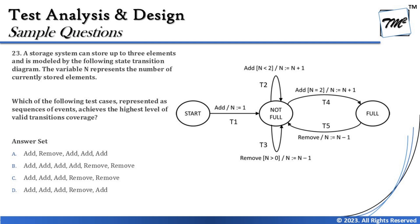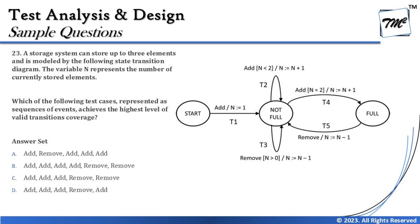Option C says: add, add, add, remove, remove. Three adds make the container full, then you can remove as long as n > 0 — removing down to one is feasible. This sequence covers all five transitions — t1, t2, t4, t5, and t3 — giving 100% valid transition coverage. Option D says: add, add, add, remove, add — this covers t1, t2, t4, t5, and t4 again, but t3 is not covered, so only four out of five transitions — 80% coverage.